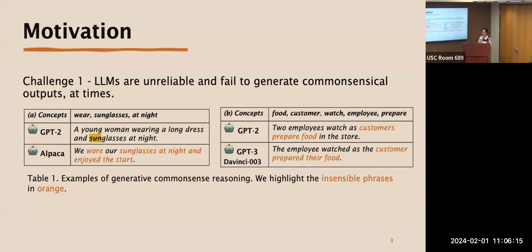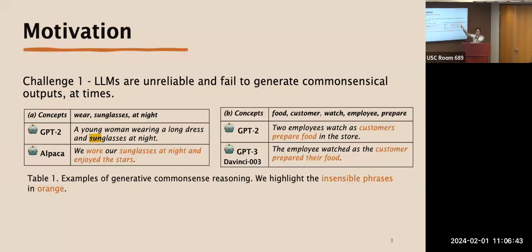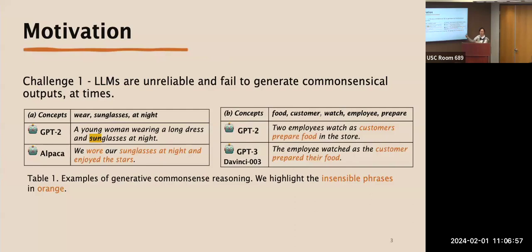We see that GPT-2 and GPT-3 both generate 'the employee will watch the customer prepare food.' But if we simply swap the order of customer and employee in the input, both models are easily influenced and swap the sentence subject accordingly. We want the model to be robust so that regardless of input concept ordering, it always produces the most plausible output. The task is to generate the most reasonable sentence — ideally order-invariant with respect to the input concepts.